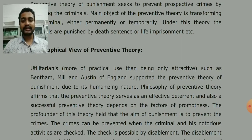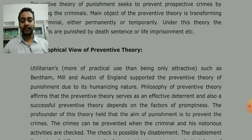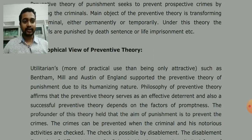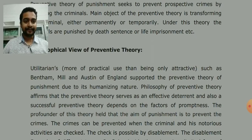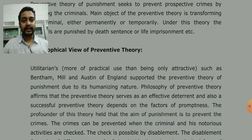They supported the preventive theory because it is very practically and logically sound. If we have to stop crime, we put the criminal in jail — the criminal is then disabled from committing any crime. It was very practical. Utilitarians such as Bentham, Mill and Austin of England supported the preventive theory of punishment due to its humanizing nature.